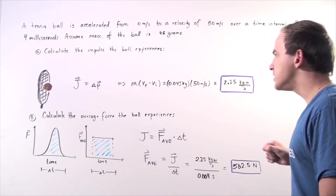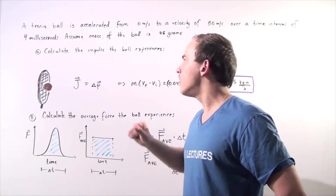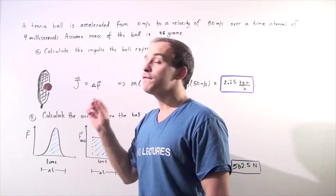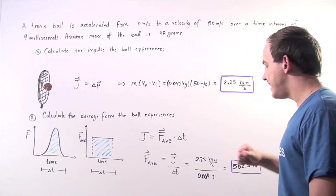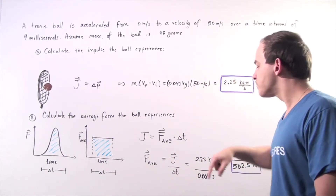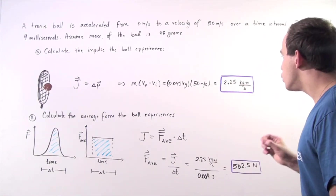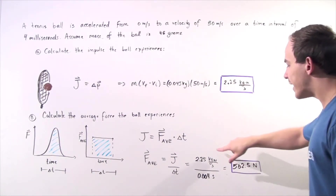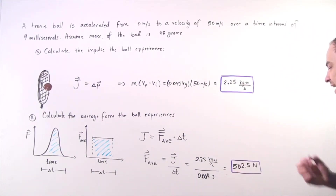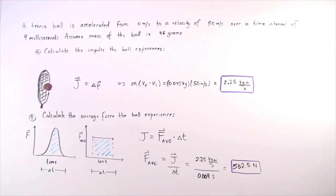We know what the change in time is — our collision takes place during an interval of 0.004 seconds, or 4 milliseconds. We plug that in for the change in time. We know the impulse the ball experiences is 2.25 kilograms times meters divided by seconds. Dividing that value, we get approximately 562.5 Newtons.